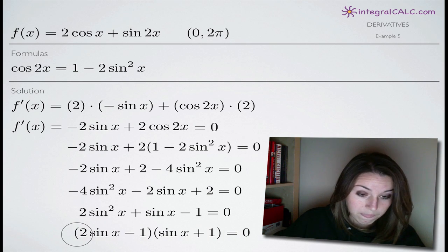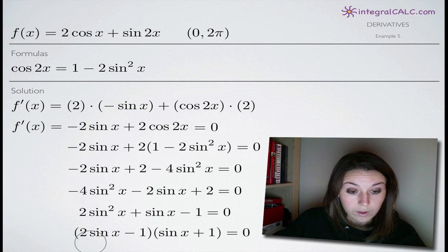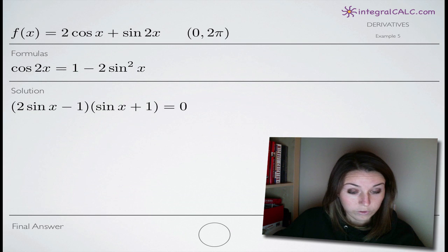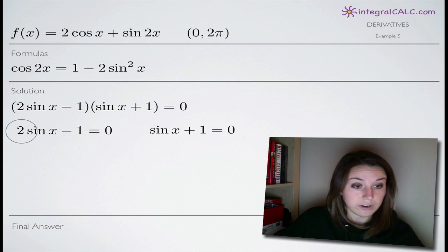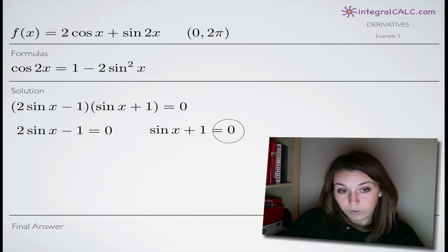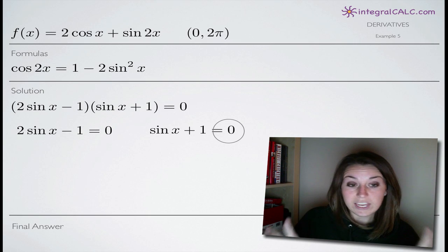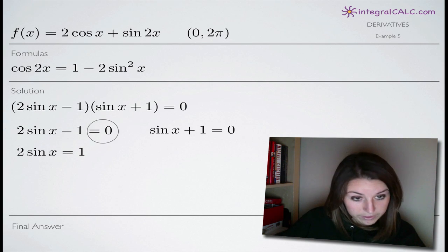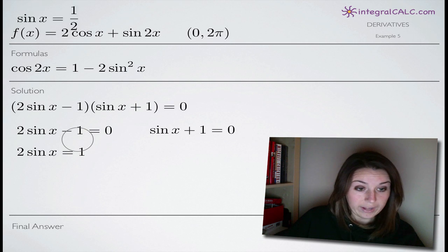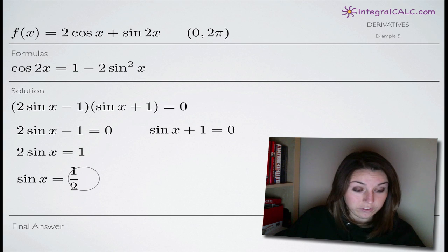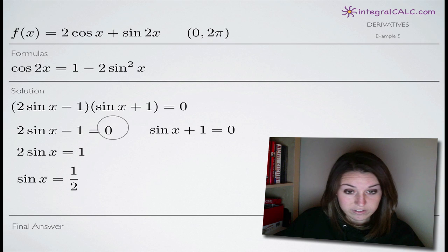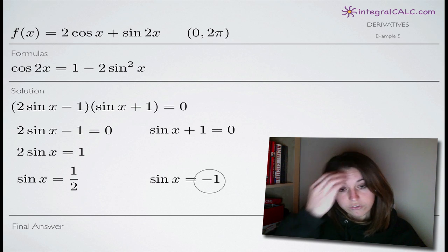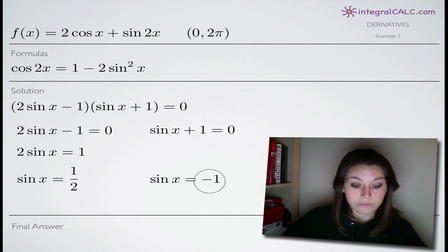The last thing that we're going to do here is factor the left-hand side. When we factor, we'll get 2 sine of x minus 1, times sine of x plus 1. Once we've factored, we realize that we have 2 roots: 2 sine of x minus 1 equals 0, and sine of x plus 1 equals 0. We can solve each of these equations for x. For the first one, we add 1 to both sides to get 2 sine of x equals 1, then divide both sides by 2 to get sine of x equals 1 half. For the second one, we subtract 1 from both sides and get sine of x equals negative 1. Those are our 2 solutions.